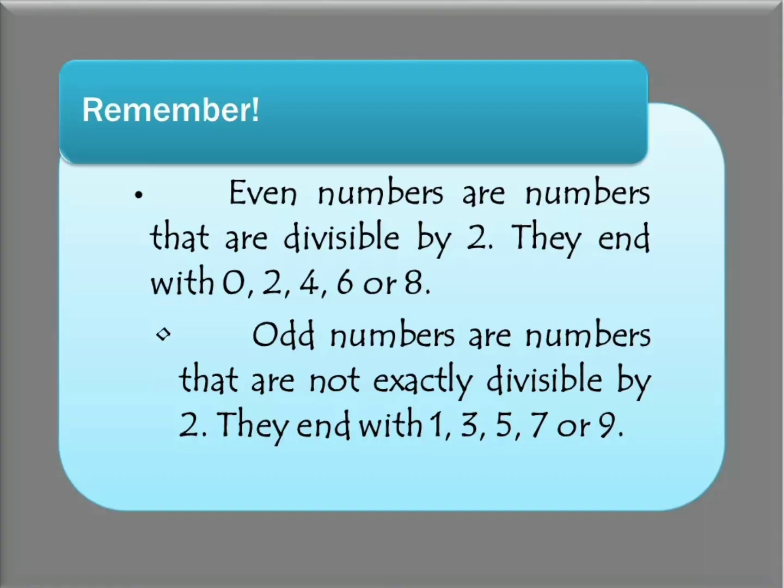Remember, even numbers are numbers that are divisible by 2. They end with 0, 2, 4, 6, or 8. On the other hand, odd numbers are numbers that are not exactly divisible by 2. If you divide them by 2, there will be a remainder of 1. These numbers usually end with 1, 3, 5, 7, or 9.